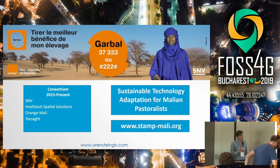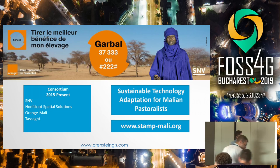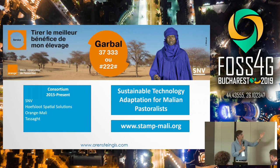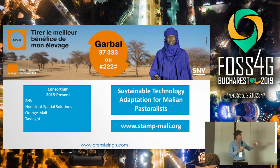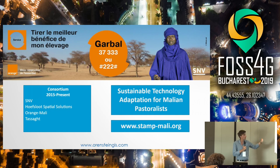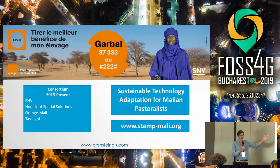The Netherlands Space Organisation provided the initial funding. There was a consortium with SNV, Half Slit Spatial Solutions — a Dutch GIS company — Orange the telecom company, a pastoralist organisation called Tassar, and a French NGO, Action Contre La Faim, also collaborating.